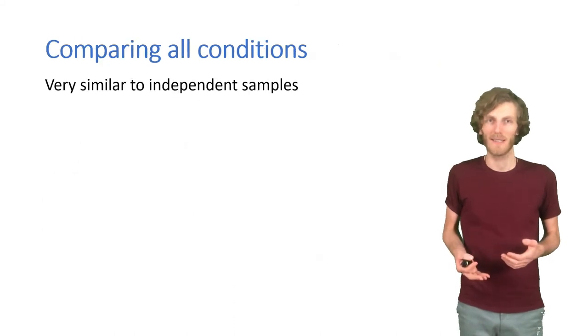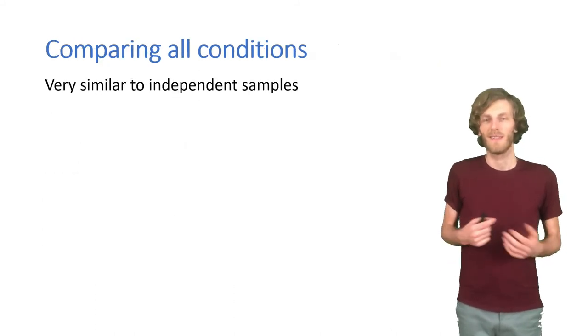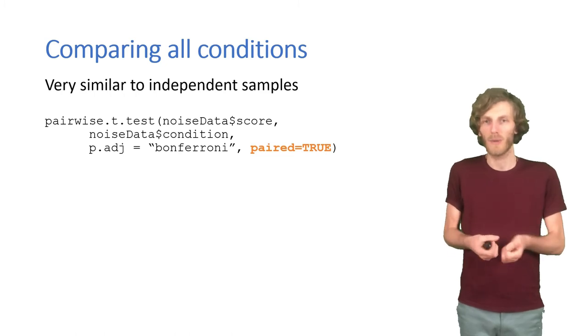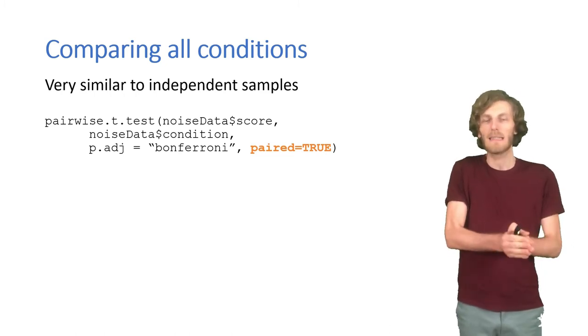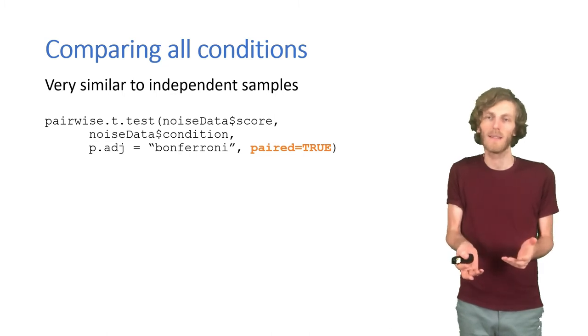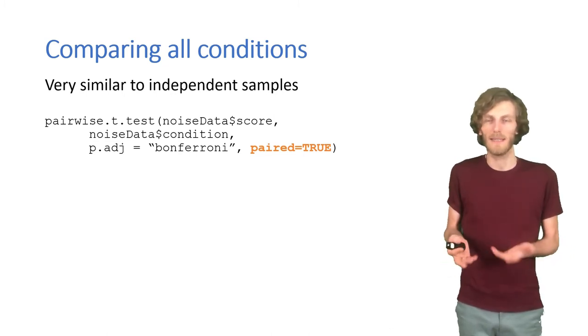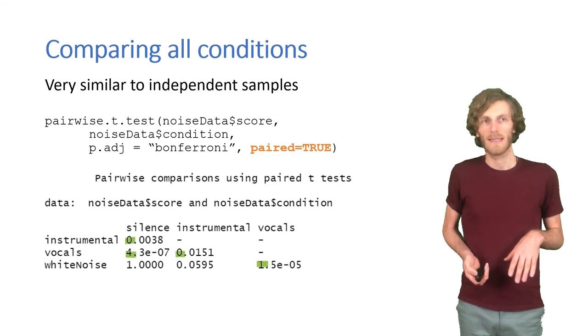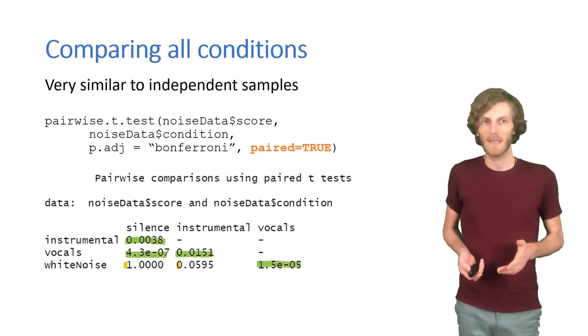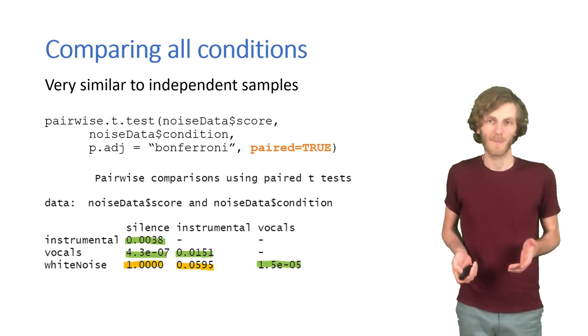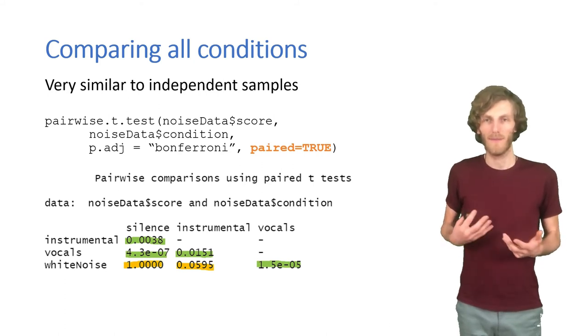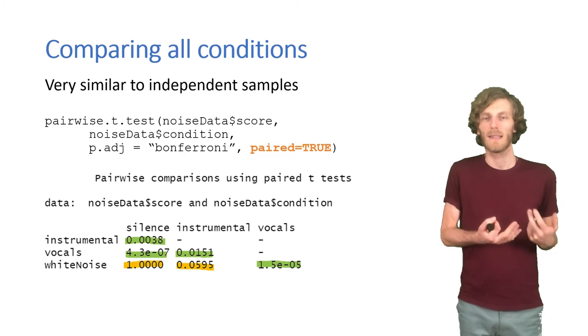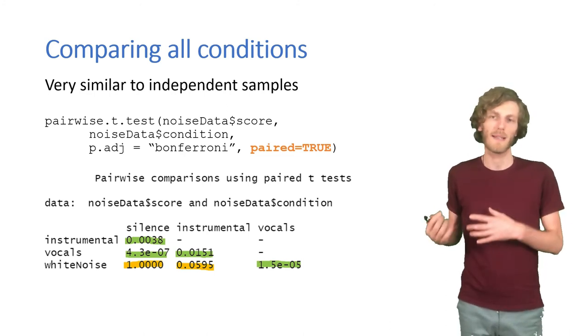Now if we want to compare the conditions, it's actually a lot closer to what we did before. Again, the only thing we need to do is to add paired equals true, because all we are doing once we have done the omnibus test is just run t-tests. We have paired t-tests, so also the pairwise t-tests can be paired. If we do that, we can see that this time we actually have four significant results and only two non-significant results, which fits in with our idea that repeated measures designs are more powerful than independent samples designs.